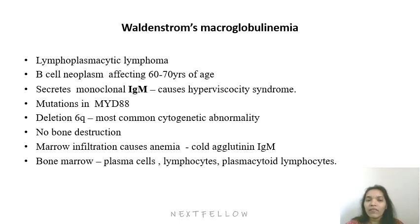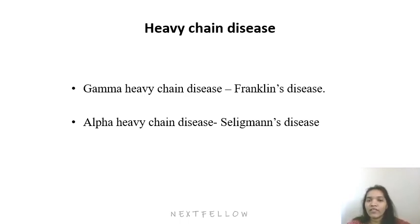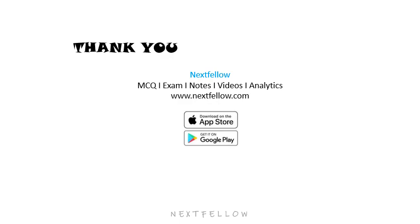Similarly, the bone marrow in Waldenström's macroglobulinemia shows plasma cells, increased lymphocytes, and plasma cytoid-like lymphocytes — these three cell types are characteristic. Predominantly there is secretion of IgM resulting in hyperviscosity syndrome. Finally, in heavy chain disease, the gamma heavy chain variant is called Franklin's disease, and the alpha heavy chain disease is called Seligman's disease.